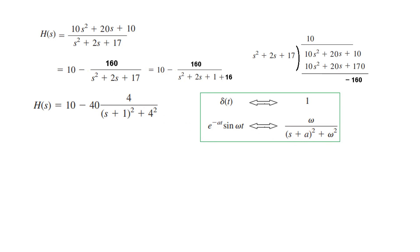And now we can go back into the time domain taking inverse Laplace. This will be 10 delta(t). Delta(t) in Laplace domain is 1. So 1 in the time domain will be delta. And similarly this, from using this formula, minus 40 e^(-t) sin 4t u(t). So this is the first part.